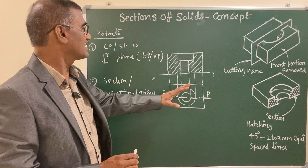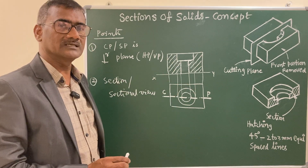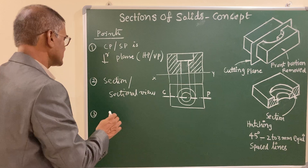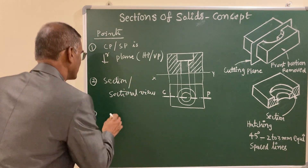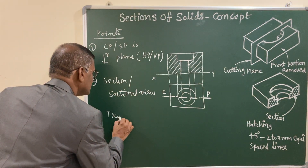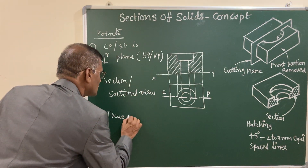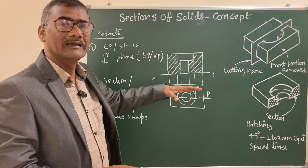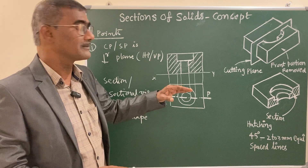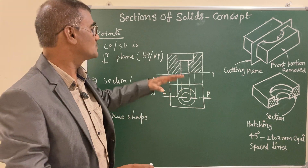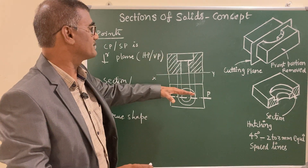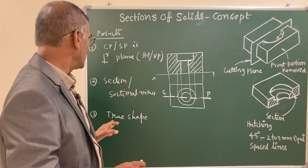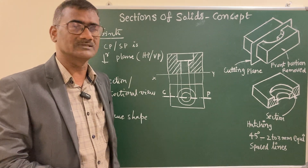For that you need to consider an auxiliary plane - it is called the true shape. To get the true shape, draw a line representing the auxiliary plane parallel to the cutting plane, project onto that plane, and you will get the true shape of the section.